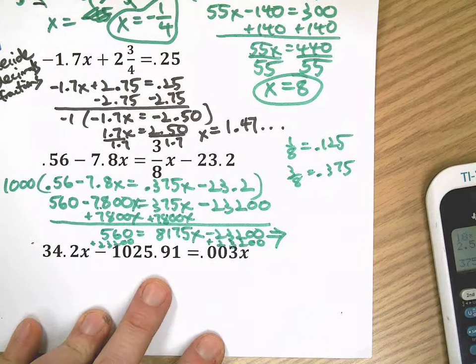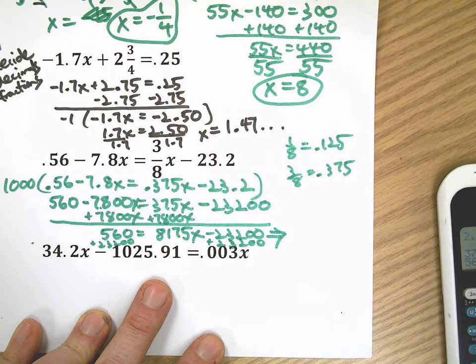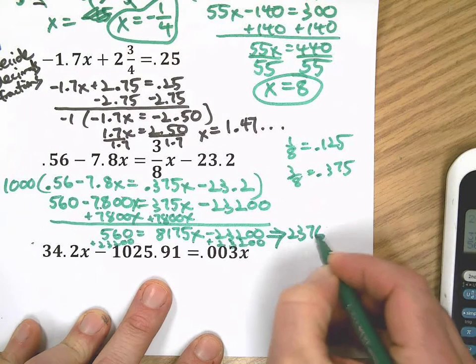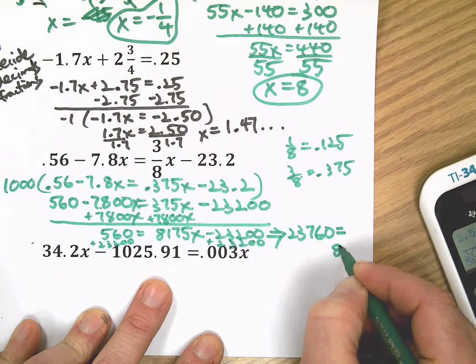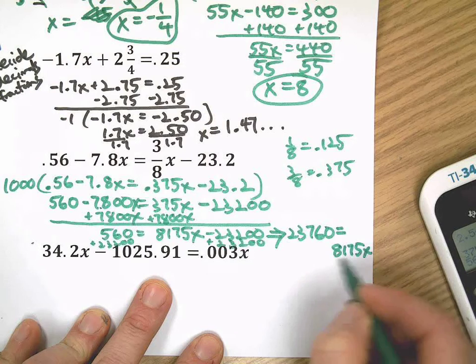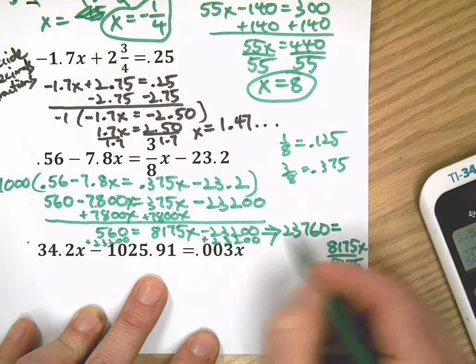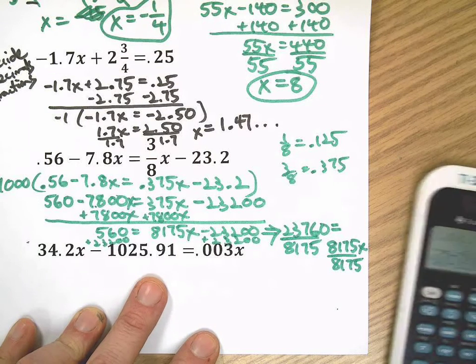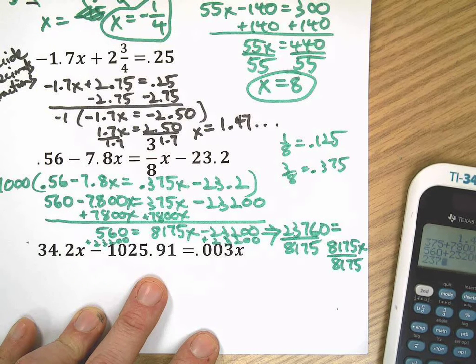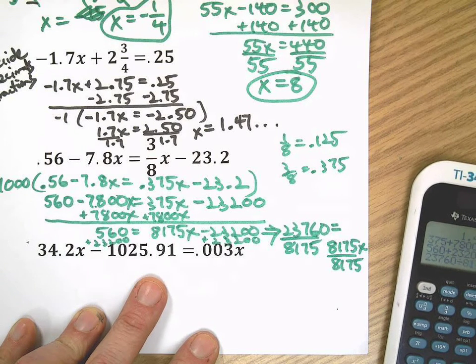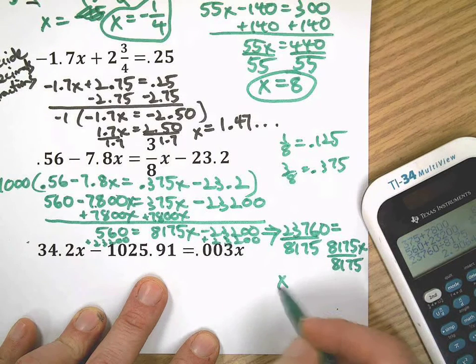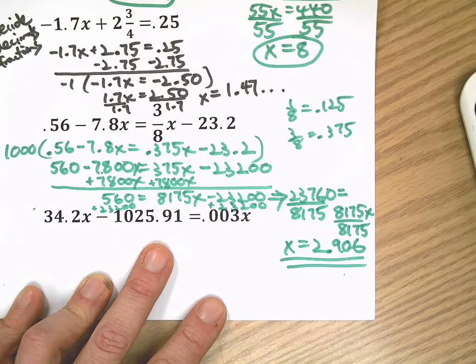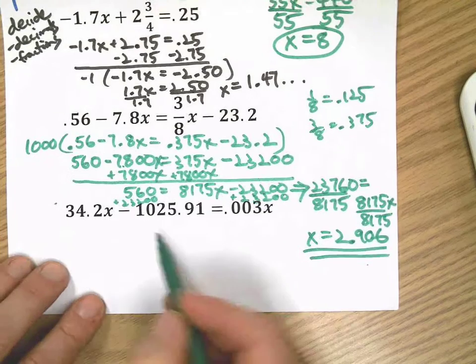Now it looks like I want to add 23200 to both sides. I'm going to have to take this work over here, I just plumb ran out of room. So I have 560 plus 23200 is 23760 equals 8175x. Divide both sides by 8175. Let's see what happens. X equals that. Did you get that? I don't know about this but I'm going to go with it.